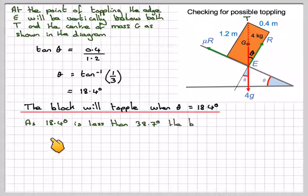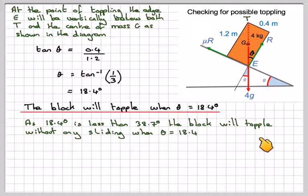So as 18.4 is less than the angle that it started sliding at, which is 38.7, the block will topple without any sliding. And this happens when theta is 18.4 degrees. So this has been a video to show you what happens to a block on a slope. Does it slide first or topple first?